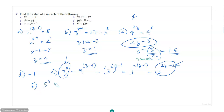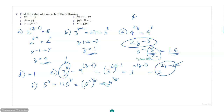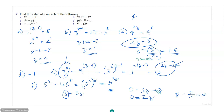For f: 5 to the power z equals 125 to the power z. Since 125 is 5 to the power 3, that becomes 5 to the power 3z. So 5 to the power z equals 5 to the power 3z, which means z equals 3z, so z equals 0.